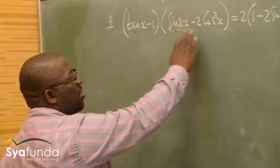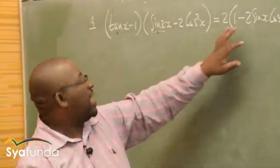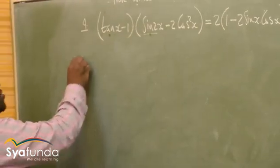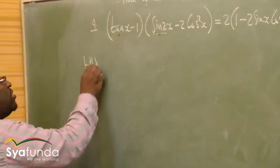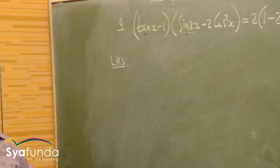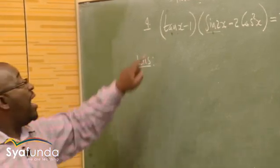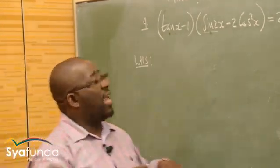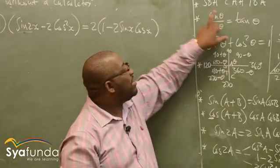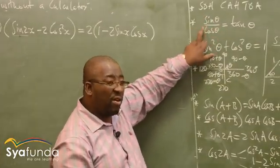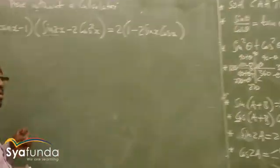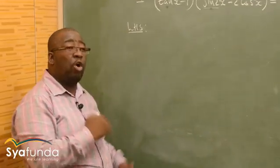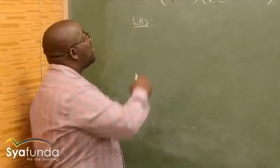I'm going to take the left-hand side and prove that it is equal to the right-hand side. Whenever I see tan x, tan x is the same as sin x over cos x. So it's advisable that when we do this problem, we change everything into sin and cos.